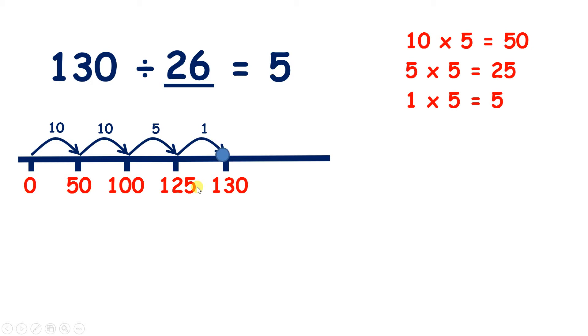But what we really did to get our answer is divide 130 by 5, because we know that with division, we can swap the divisor and the quotient around to get a related division fact.